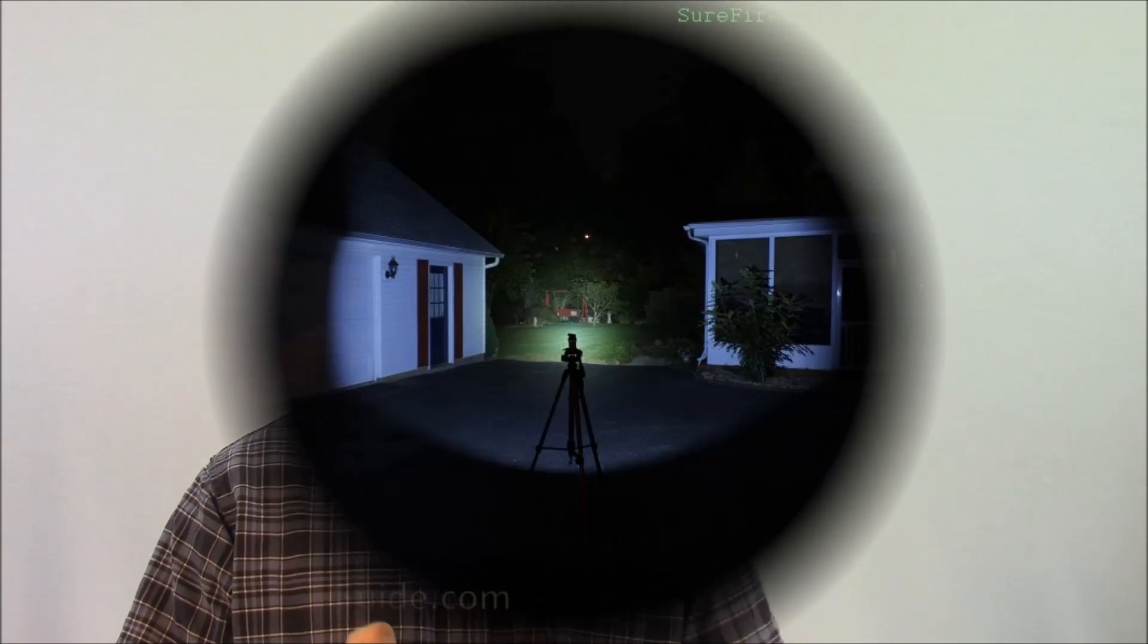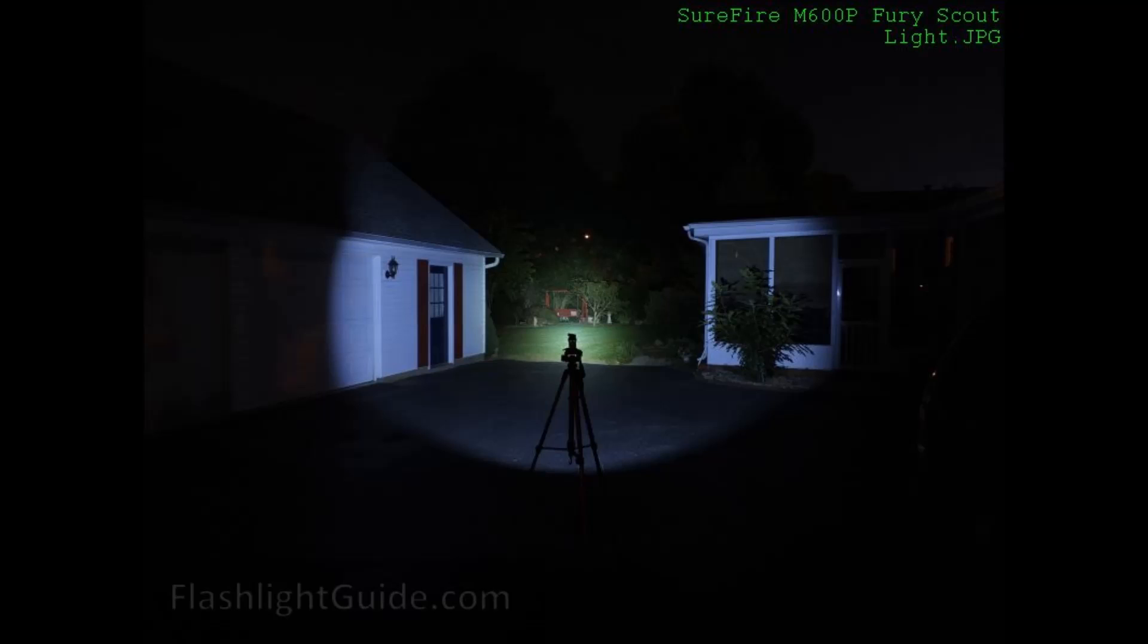To see what I'm talking about, take a look at these photos provided by flashlightguide.com. This photo was taken with illumination by a reflector-based 600 lumen flashlight. Notice the very abrupt boundary between light and darkness, what we call a hard edge.